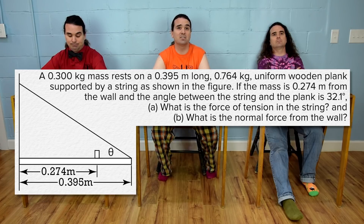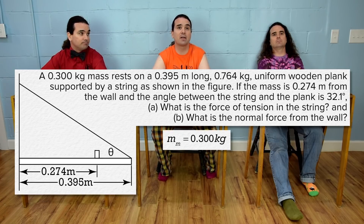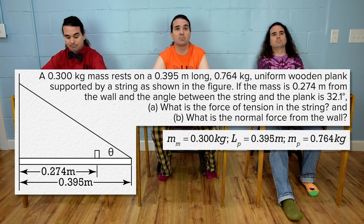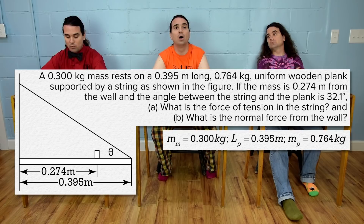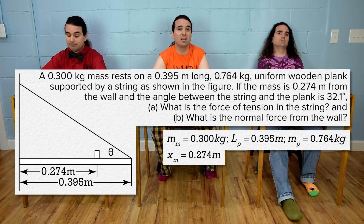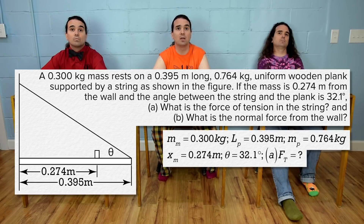Stop. The mass of the mass equals 0.300 kilograms. The length of the plank equals 0.395 meters. The mass of the plank equals 0.764 kilograms. If the mass is 0.274 meters from the wall and the angle between the string and the plank is 32.1 degrees, part a: what is the force of tension in the string, and part b: what is the normal force from the wall? Distance from wall to mass is 0.274 meters, theta equals 32.1 degrees, part a force of tension equals question mark, and part b force normal equals question mark.